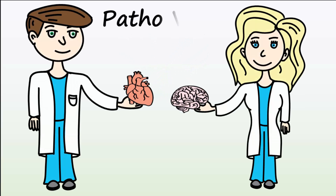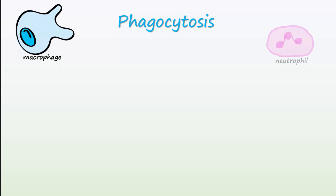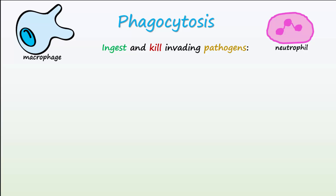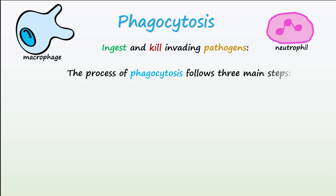Welcome to another patho video. Today's topic is phagocytosis. Phagocytosis allows phagocytic cells such as macrophages and neutrophils to ingest and kill invading pathogens. The process of phagocytosis follows three main steps: first, recognition and adherence; second, engulfment; and finally, intracellular killing.